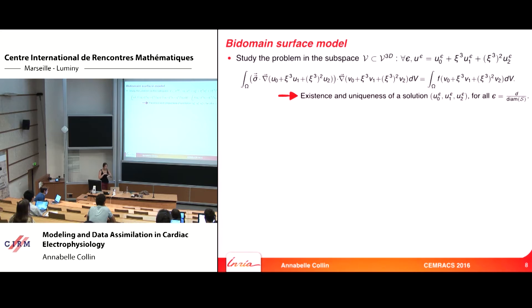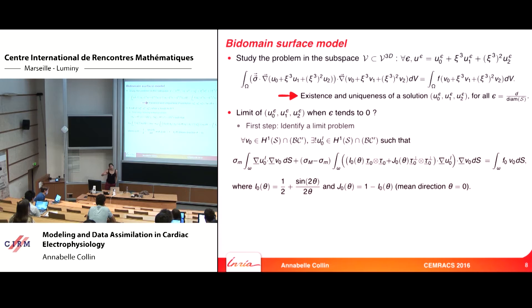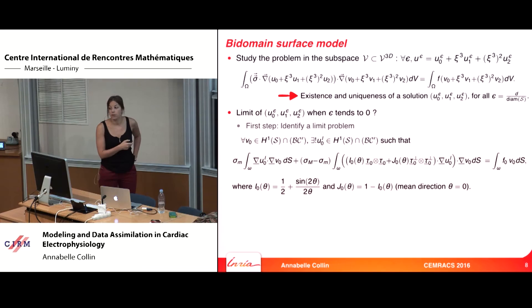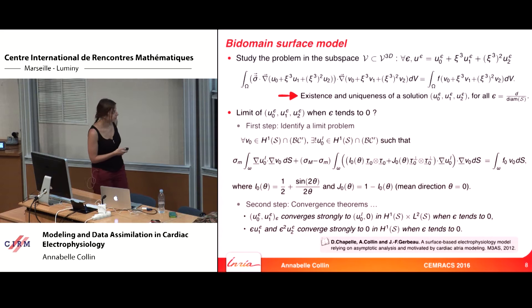When deriving a bidomain surface model, the first step consists in identifying a limit problem by keeping only the leading terms in the asymptotic expansion. You obtain two terms: the first is the homogeneous term with propagation in all directions, and the second is the anisotropic term, which is a decomposition along the basis T0 and its orthogonal, with parameters depending on the angle theta. When theta equals zero, everything is along T0; larger theta increases the contribution of the second part.